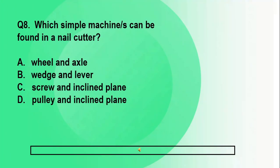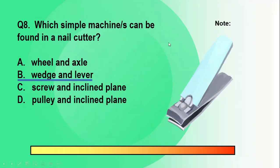Question number eight. Which simple machines can be found in a nail cutter? The best answer is letter B, wedge and lever. So you can find the wedge on this part of the nail cutter and the lever on this part. For the lever, the fulcrum is located here.